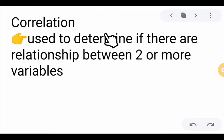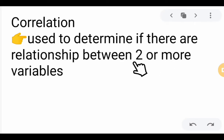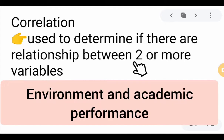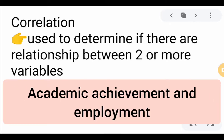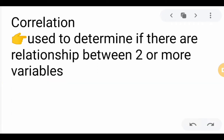Correlation is used to determine if there are relationships between two or more variables. Here are three examples of correlation: first, environment and academic performance; second, self-confidence and exam scores; and third, academic achievement and employment. Those are examples of correlation that are studied under Pearson R.